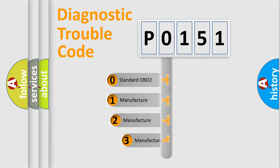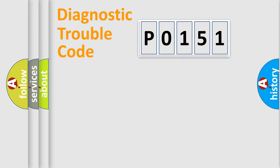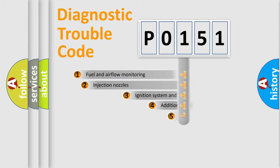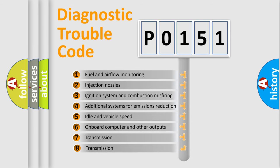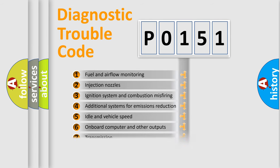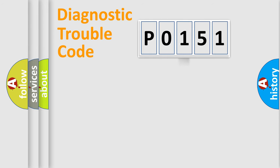If the second character is 0, it is a standardized error. In the case of numbers 1, 2, or 3, it is a manufacturer-specific error. The third character specifies a subset of errors. The distribution shown is valid only for standardized DTC codes.